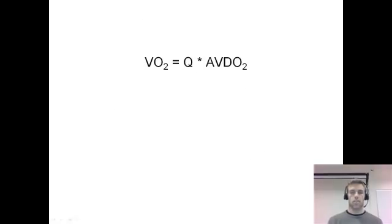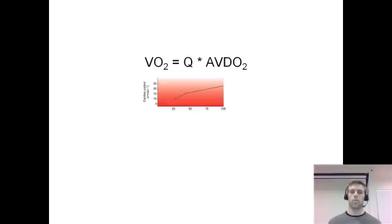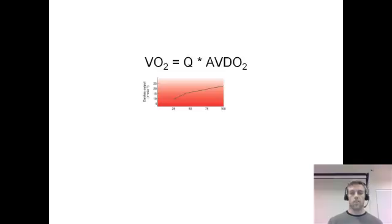Looking at a visual representation, this is a typical graph of cardiac output versus your percent of VO2 max. The y-axis is cardiac output in liters per minute, and the x-axis is your percent of VO2 max. At 25% of your VO2, cardiac output is relatively low, and it gradually increases up to 100% of your VO2 max. There's a kink in the middle of that graph, and we'll get to the reason for that now.